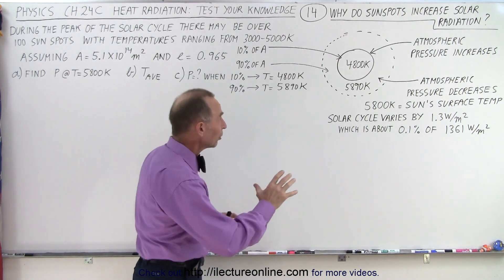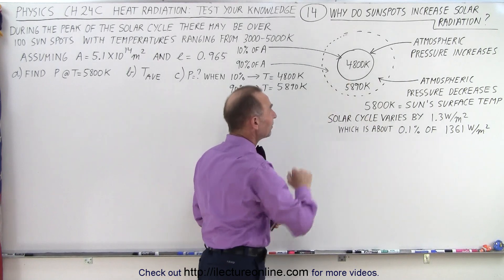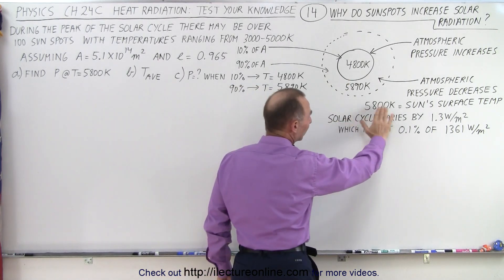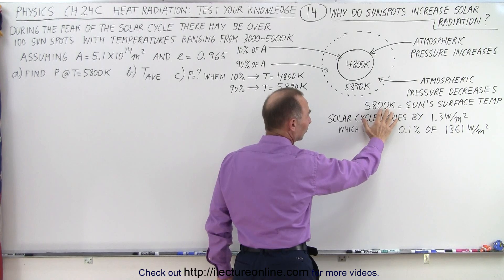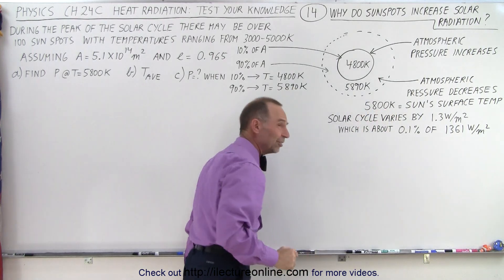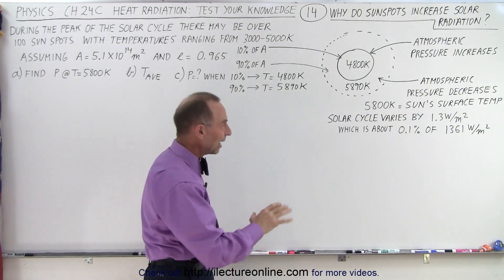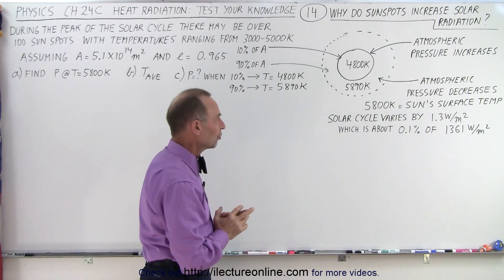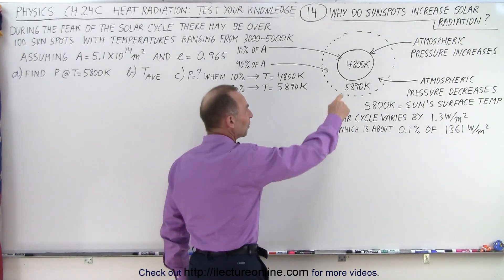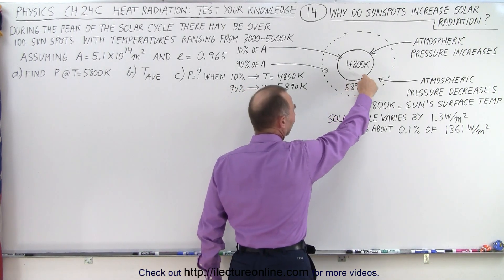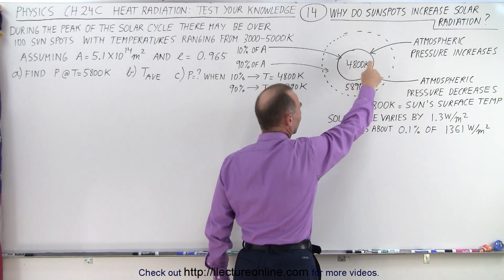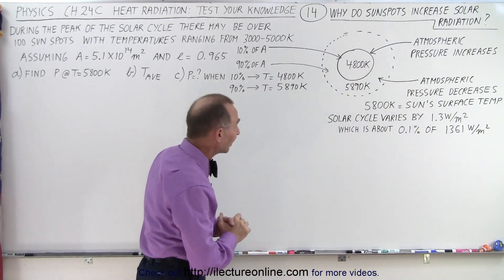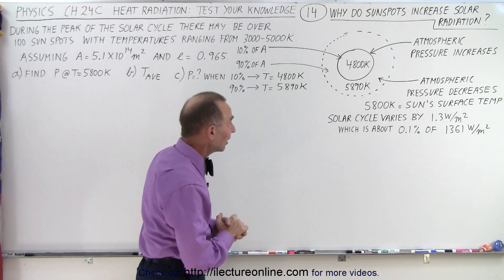Let's take a look at a typical sunspot right here. Notice that if the typical temperature of the surface of the Sun is about 5,800 Kelvin — let's take that as the surface temperature — then the sunspot can be quite a bit less. Let's say the sunspot is at a temperature of about 1,000 degrees Kelvin less: 4,800 Kelvin.